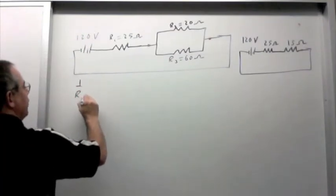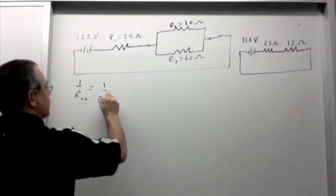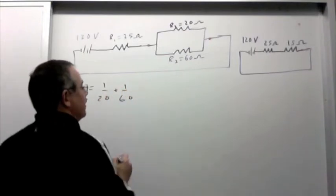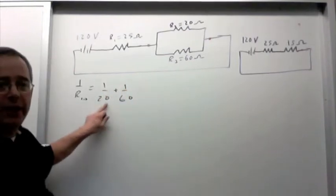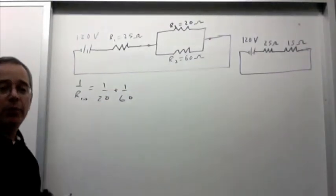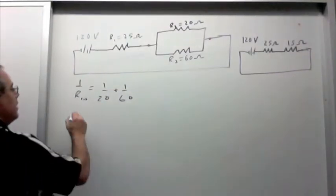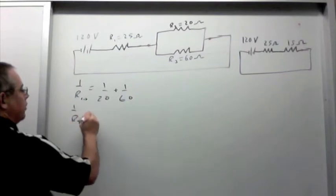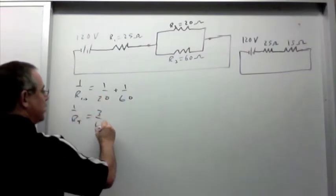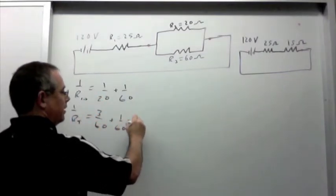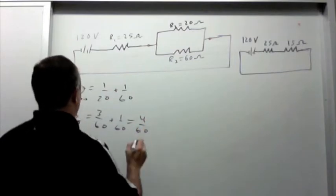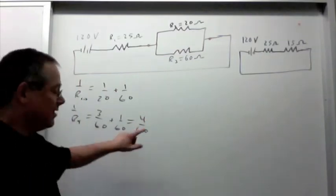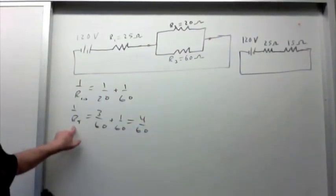1 over R total equals 1 over 20 plus 1 over 60. Several ways to solve this. Probably the easiest is just to find a common denominator, which in this case is 60. So that's 1 over R total equals 3 over 60 plus 1 over 60, which is equal to 4 over 60. And 4 over 60 is not R total. That's 1 over R total.